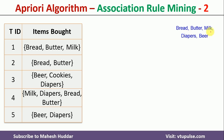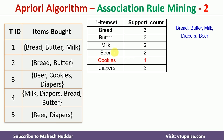In this case, we have 5 unique products: bread, butter, milk, diaper, and beer. We write those in the first column of the table as one-itemsets. Then we count the number of times each particular product was bought. For example, bread was bought 3 times. Similarly, butter was bought 3 times. We write the support count for each item in the second column. This gives us the one-itemset table.